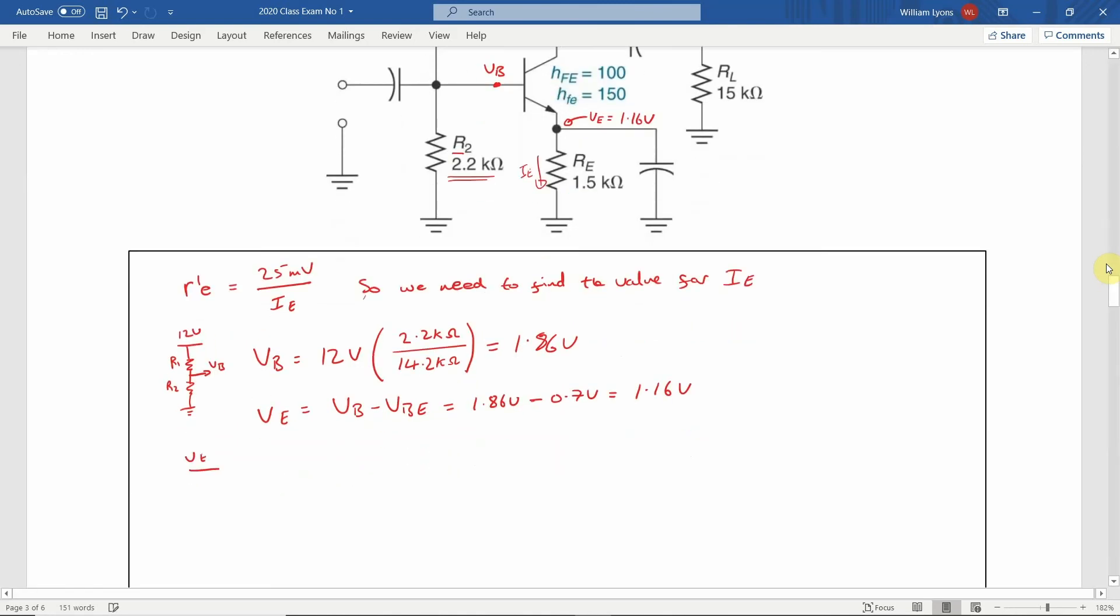If we now draw out the emitter section of the circuit, we can use Ohm's law to calculate the value of IE, the emitter current. IE is equal to the emitter voltage of 1.16V divided by the emitter resistance, RE, of 1.5kΩ. This results in a value of IE equal to 773μA.